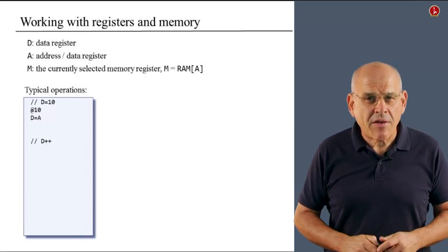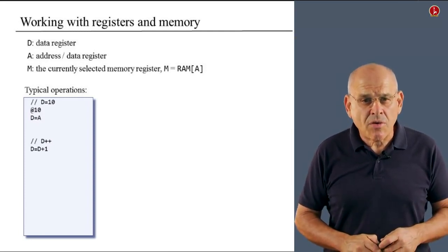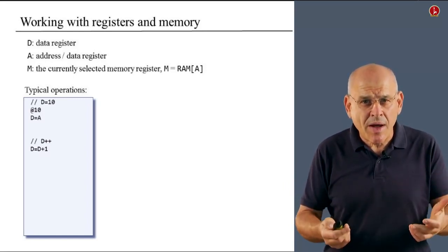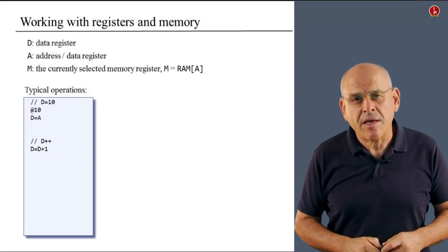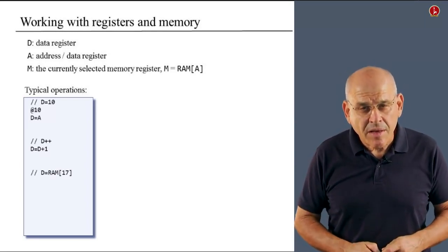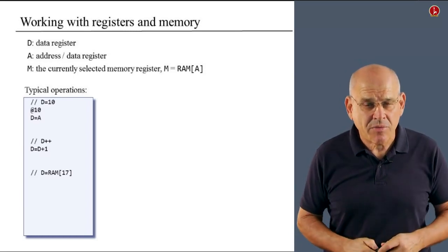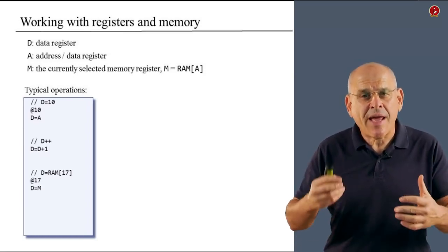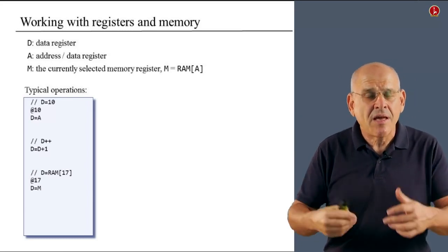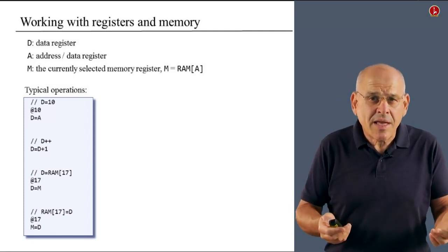Let us assume that you want to store the number 10 in register D. Well, it turns out that there's no direct way to do it. If you look up the language documentation, there's no C instruction that lets you do something like that. So we have to do it indirectly. And what we do is we set the A register to 10, and then we say D equals A. Simple. Moving along, what about incrementing the value of D? Well, it turns out that this actually can be done directly in one instruction only. Because once again, if you look up the documentation of the C instruction, you will see that you can tell the ALU to compute the value of D plus 1, and then you can take the result and store it in D. So effectively, we perform a D plus plus operation.